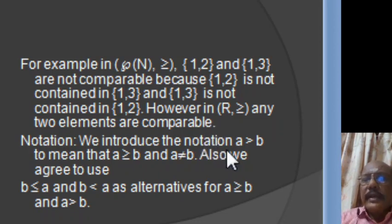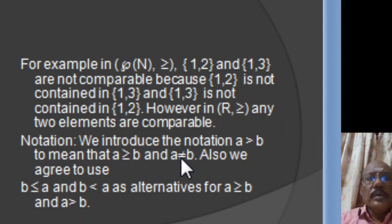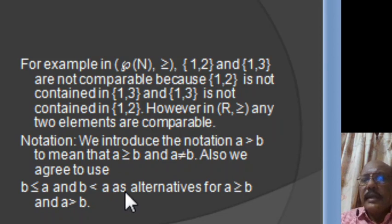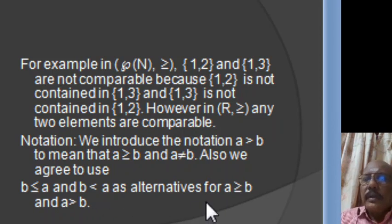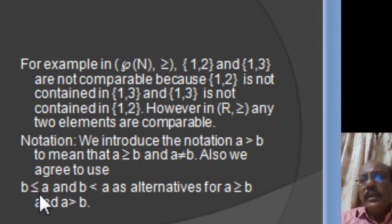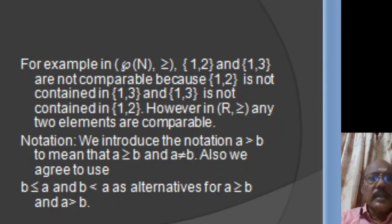Now we introduce the notation A > B to mean that A ≥ B but A ≠ B. Also, we agree to use B ≤ A and B < A as alternatives for A ≥ B and A > B respectively. So in our discussion, we write B ≤ A if A ≥ B — that is the meaning of the ≤ symbol.